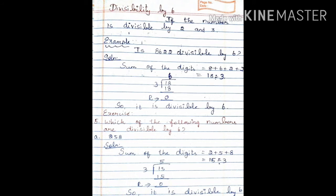Now, divisibility by 6. If a number is divisible by 6, it must be divisible by both 2 and 3. For example, 8,622: first check divisibility by 2 — the last digit ends in 2, so it is divisible by 2. Next, check divisibility by 3 — sum of digits: 8 plus 6 plus 2 plus 2 equals 18. 18 divided by 3: 6 threes are 18, remainder is 0. So 8,622 is divisible by 6.